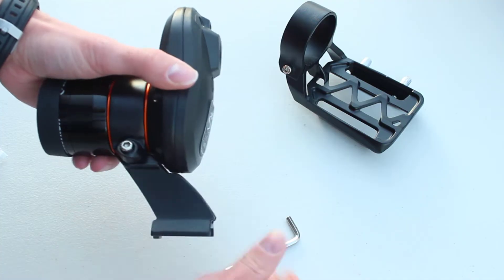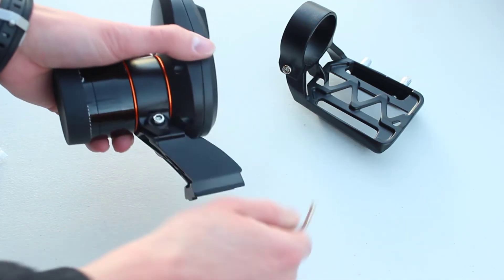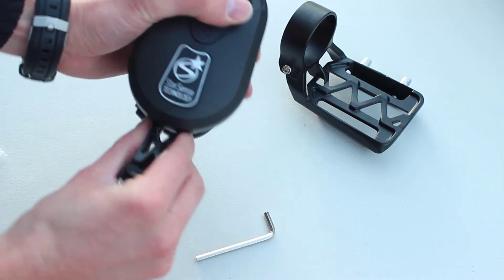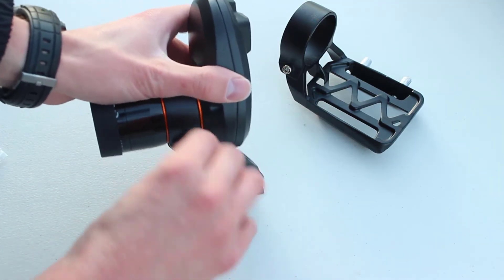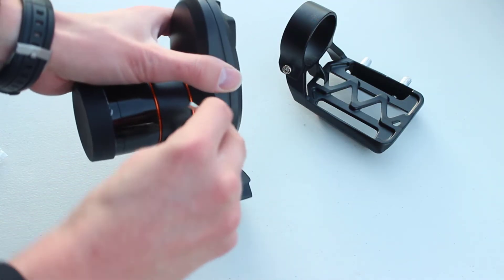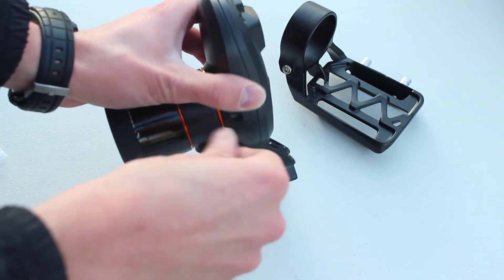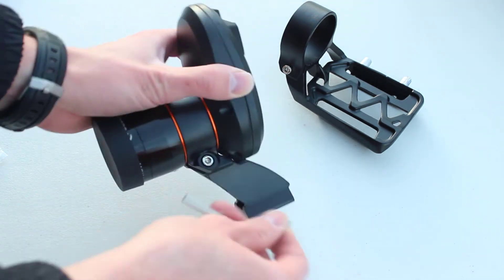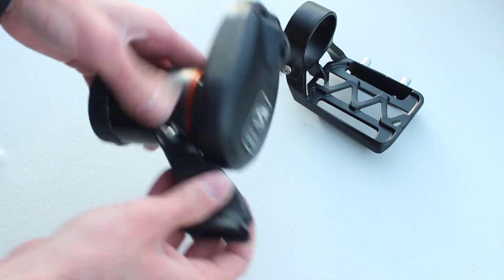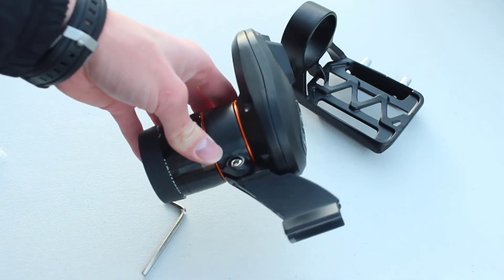And once everything's nice and tight, I like to just loosen this a little bit more, get the StarSense straight, and then tighten it back down. Nice and tight. And you swapped out the bracket to the small one.